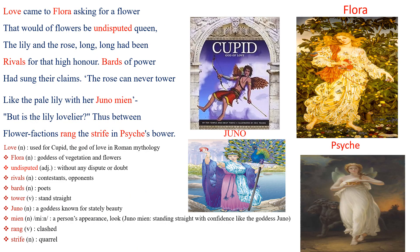The lotus flower has immense significance in Hindu mythology, and the present poem is about the queenliest flower, the lotus. The characters we come across in the poem are Love, Flora, Juno, and Psyche — these characters are from Roman mythology.